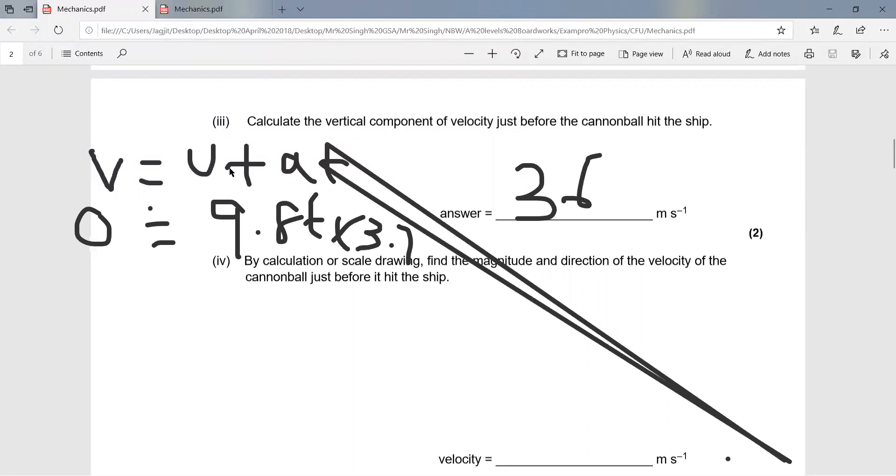Simply use the equation v equals u plus at, then put the values in and you'll get the answer of 36 meters per second.